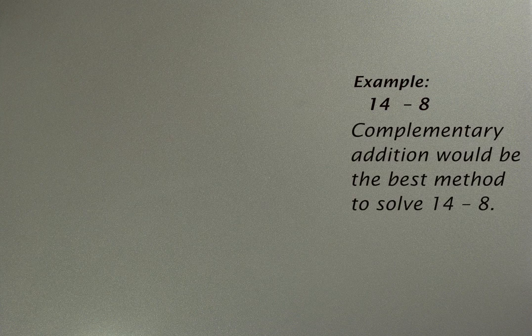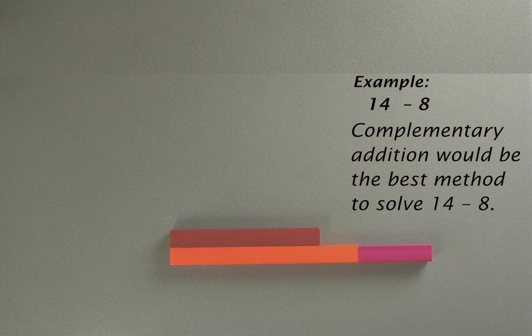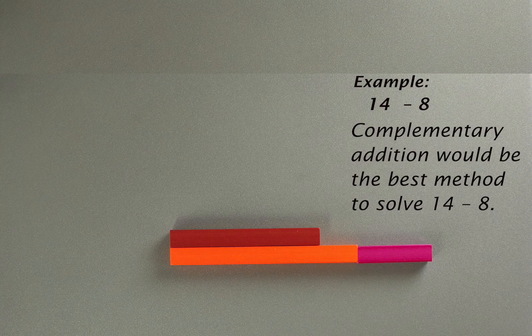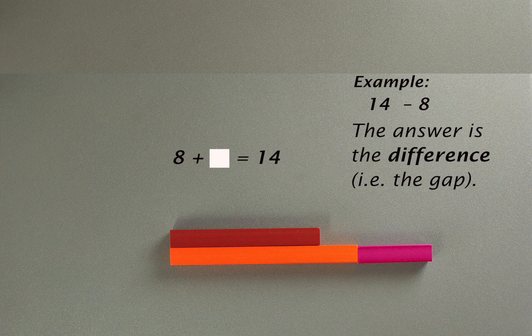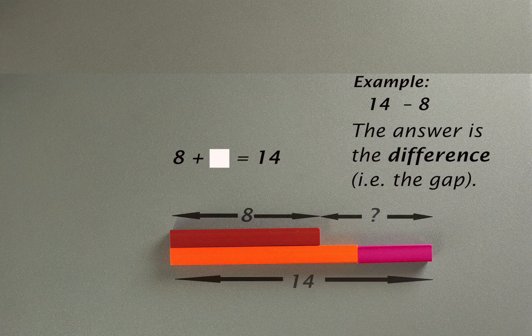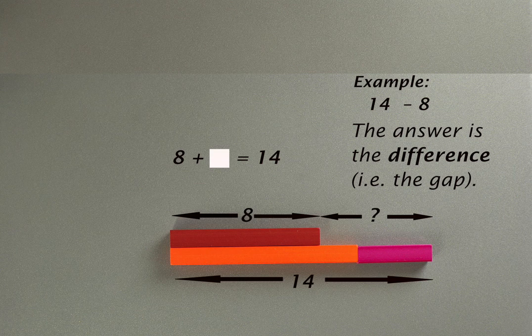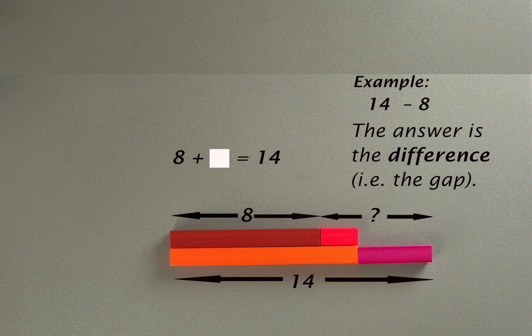In an example such as 14 minus eight, complementary addition would be the best method. The answer is the difference, the gap between the two numbers. And we can achieve that by working forwards. What must be added to eight in order to reach, or to equal, 14?